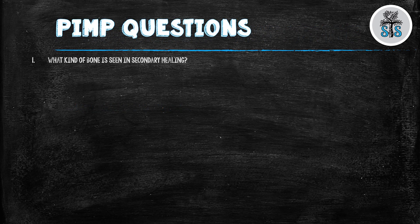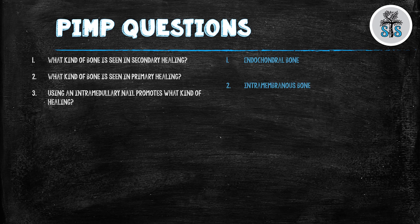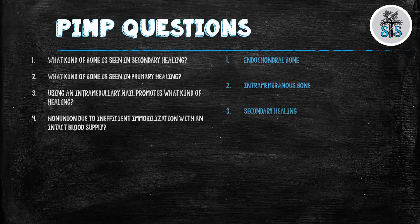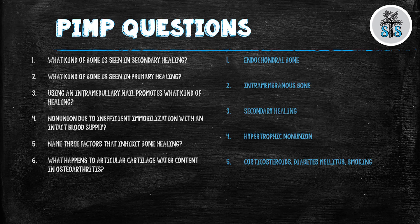Let's go over some pimp questions. What kind of bone is seen in secondary healing? Endochondral bone. What kind of bone is seen in primary healing? Intramembranous bone. Using an intramedullary nail promotes what kind of healing? Secondary. Non-union due to inefficient immobilization with an intact blood supply leads to hypertrophic non-union. What are the three factors that inhibit bone healing? Steroids, diabetes, smoking. What happens to articular cartilage water content in osteoarthritis? It increases. And lastly, how many bones? 206. Hope you enjoyed this lecture — see you soon.